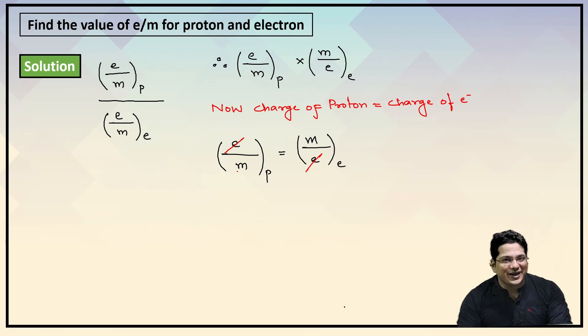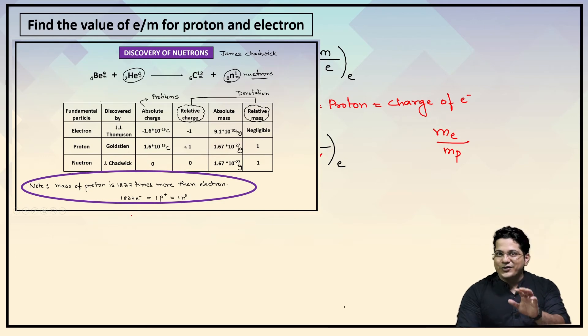When proton and electron charges cancel, what remains? You would just be left with mass of electron upon mass of proton. If you remember the second lecture, in the second module, there was an important note with a table.